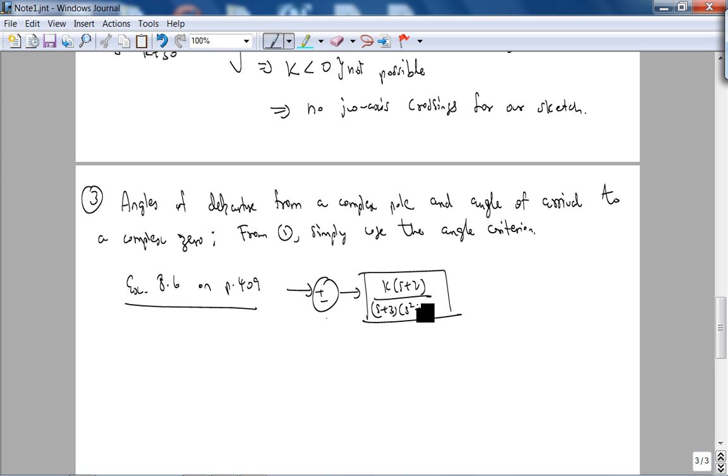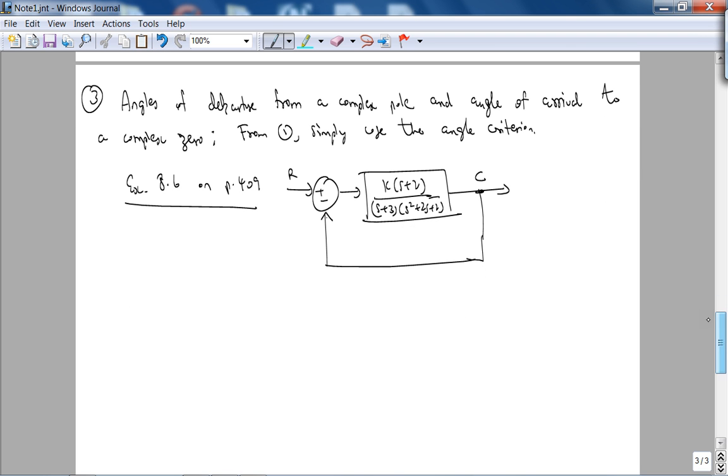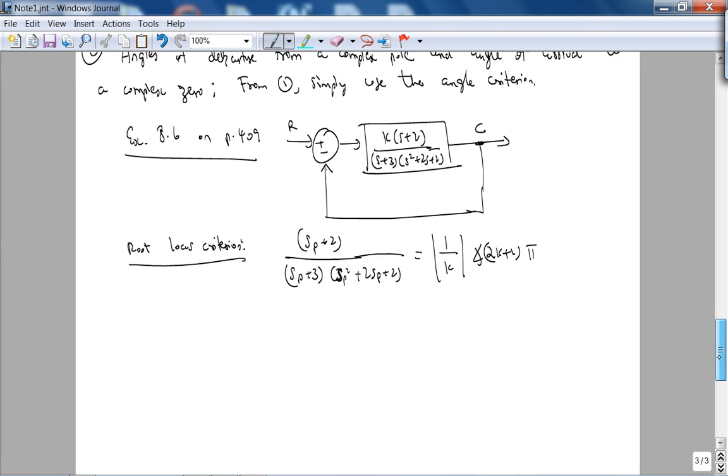The system is s+3 times (s²+2s+2). So basically the root locus criterion gives us that (s+2) over [(s+3)(s²+2s+2)] equals 1/k at a phase angle of (2k+1)π. Now you can see that in this sketch, when we start sketching the root locus, we have a pole at -2.